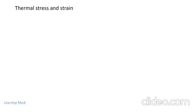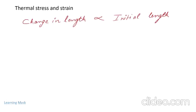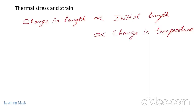We will use this principle for finding thermal stress and thermal strain. We observe that change in length is directly proportional to initial length, and change in length is directly proportional to change in temperature. So we write the expression as ΔL = α·L·ΔT, where α is the proportionality constant, L is the initial length, and ΔT is the change in temperature.